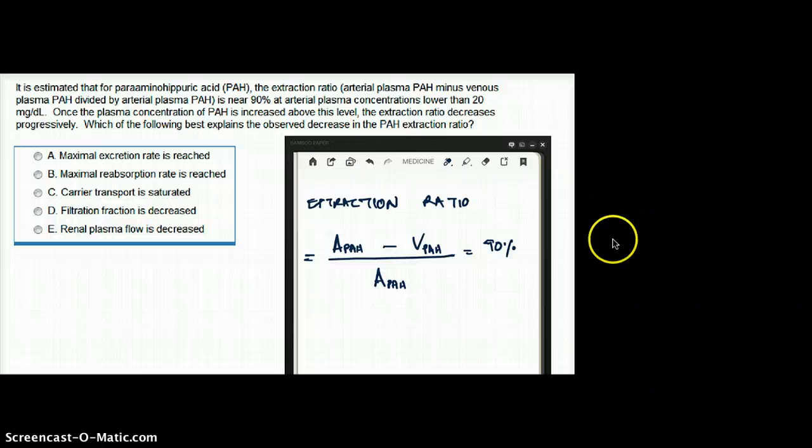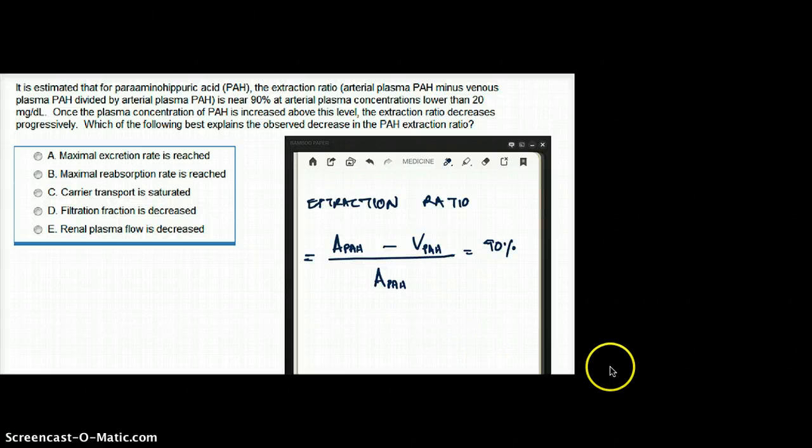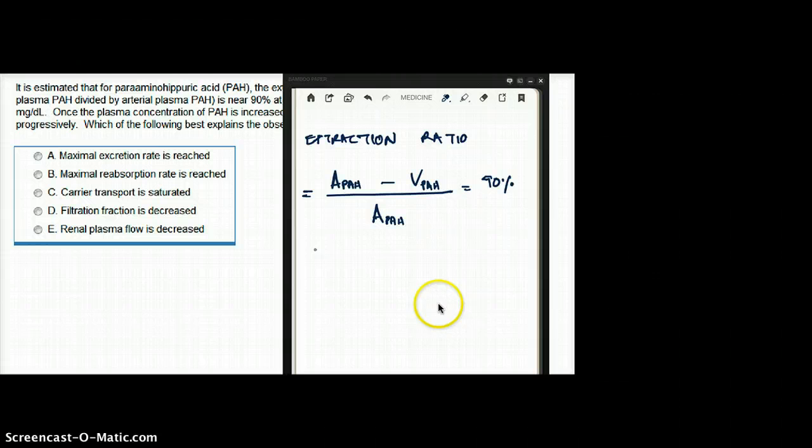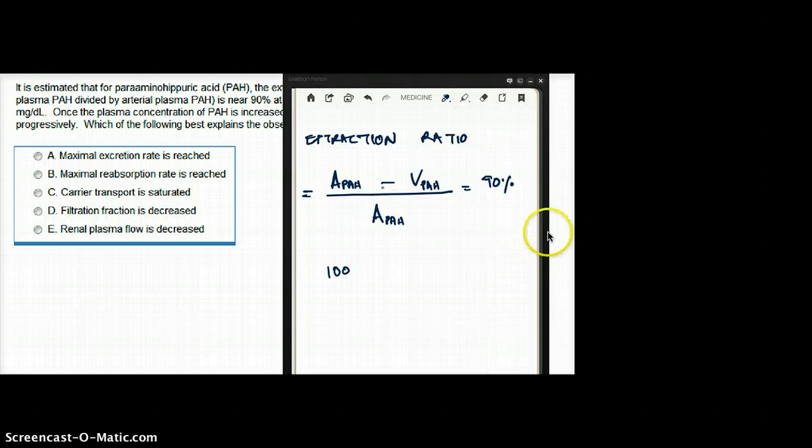So what's extraction ratio? It's kind of the amount of PAH that we are getting rid of the system. See, how are they really getting this 90% value? Let's say in your artery, you have an approximate value, let's say 100. And the amount that's going back to the vein, let's say it's 10.